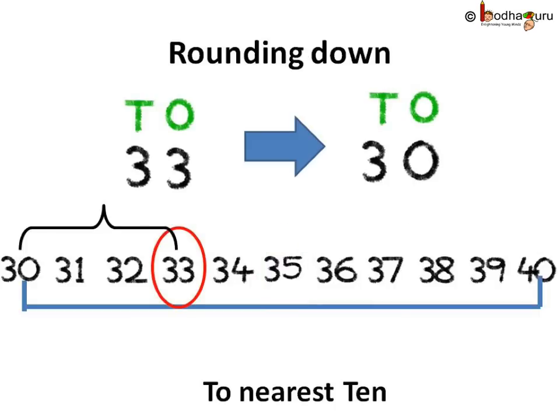So what did we do actually? Well, we rounded a number to its nearest 10. When the 1's digit is 4 or less, we round down. Meaning, 10's digit remain unchanged.